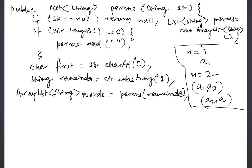So this line of code will give us all the possible permutations till n minus 1. So if you're at n equals 100, this line of code will give you all possible permutations till n equals 99. So now all we have to do is loop through this and insert the character at all possible places.